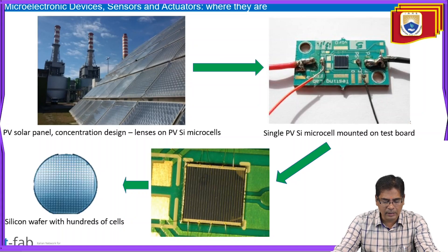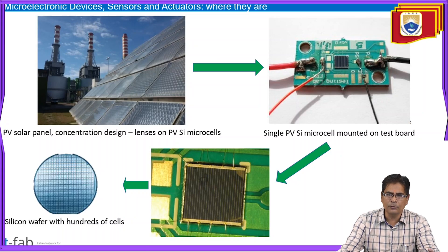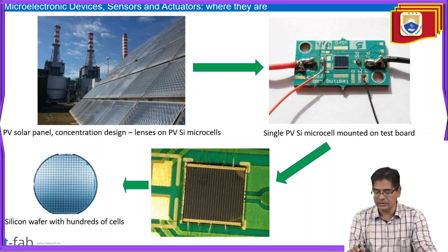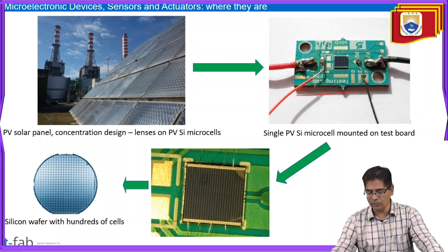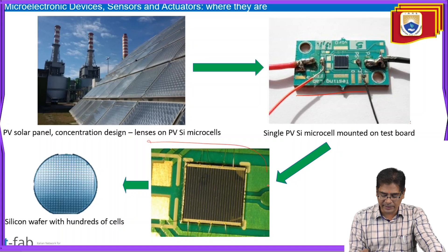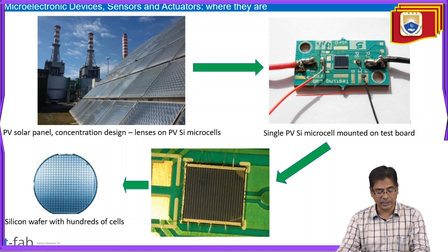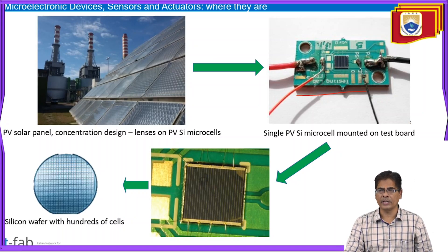Solar panels are made of thin film cells — photovoltaic solar panels with a concentration design, lenses on photovoltaic silicon microcells, and a single photovoltaic silicon microcell mounted on a test board. A silicon wafer contains hundreds of such cells, where the thin film fabrication takes place.